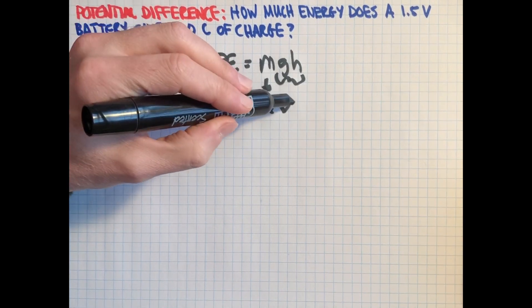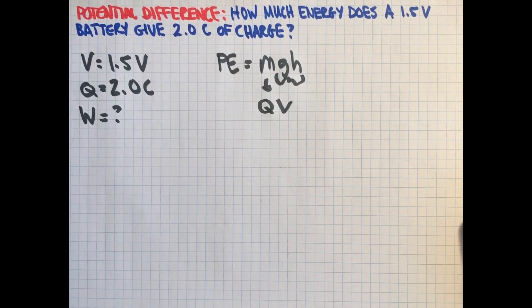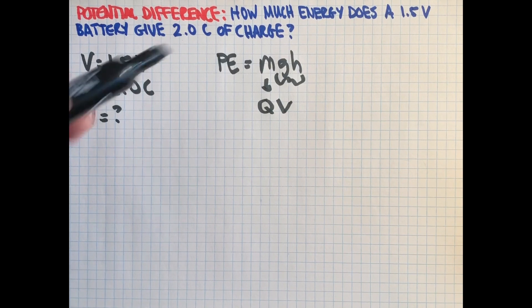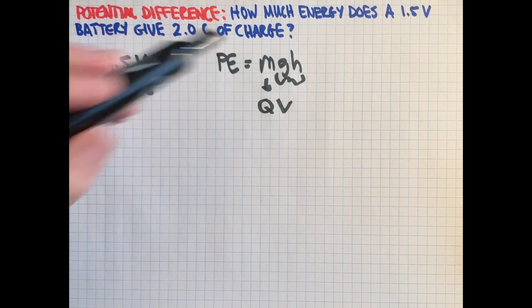Then we have this half of the equation which deals with, in a sense, you can mix up how high something is versus how strong gravity is. If gravity was very strong, you would not need to lift it very high to get that same potential energy, that same mass.